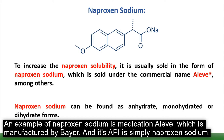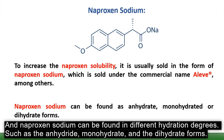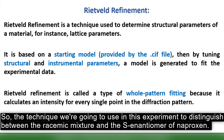An example of naproxen sodium is the medication Aleve, manufactured by Bayer, where the active pharmaceutical ingredient is naproxen sodium. Naproxen sodium can be found in different hydration degrees, such as the anhydrous, monohydrated, or dehydrated forms.